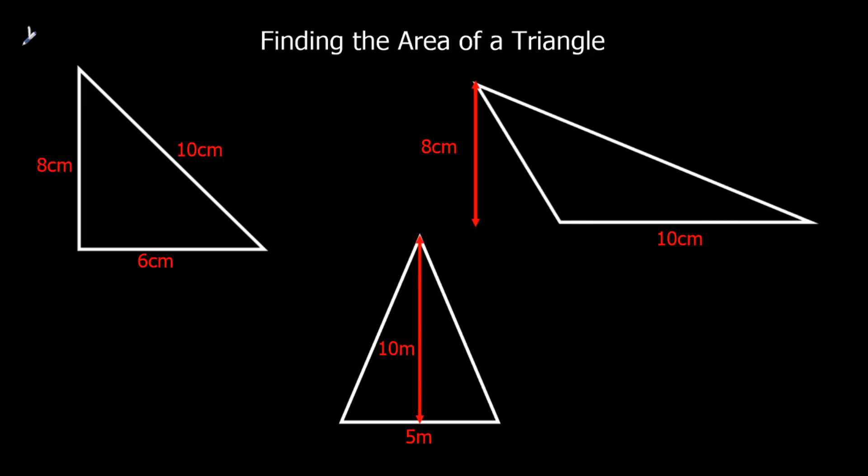Okay, so remember the formula. Half times base times height. That's how we find the area of a triangle. So for this one, we're looking at the perpendicular height. Remember, this one's slanty. We don't want this one. We want the perpendicular, the straight up height. So it's half times 6 times 8. Half times 6 is 3. And 3 times 8 is 24. So 24 centimeters squared.